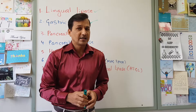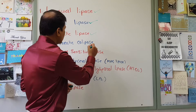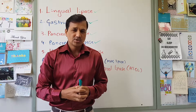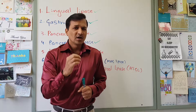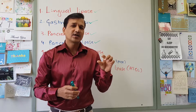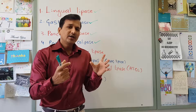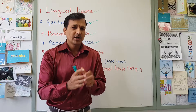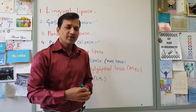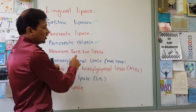Our third lipase is pancreatic lipase, and I am going to explain it along with another pancreatic enzyme called pancreatic colipase. Pancreatic lipase acts on short, medium, and long chain fatty acids attached to triacylglycerol. However, it only acts on fatty acids attached to the first and third carbon of triacylglycerol — it does not release the fatty acid attached to the second carbon. Pancreatic lipase needs colipase because it is inhibited by bile acids and bile salts present over the chylomicron. Pancreatic colipase removes that inhibitory effect so that pancreatic lipase can work. The pancreas secretes pancreatic lipase along with colipase in a one-to-one molar ratio.